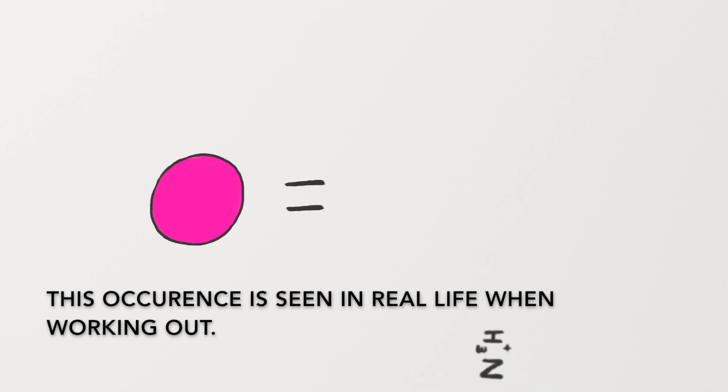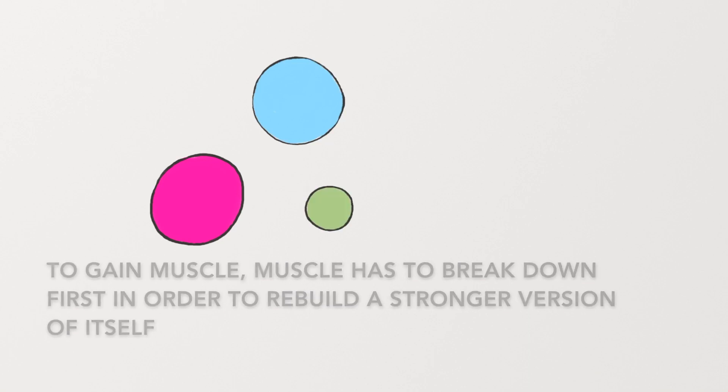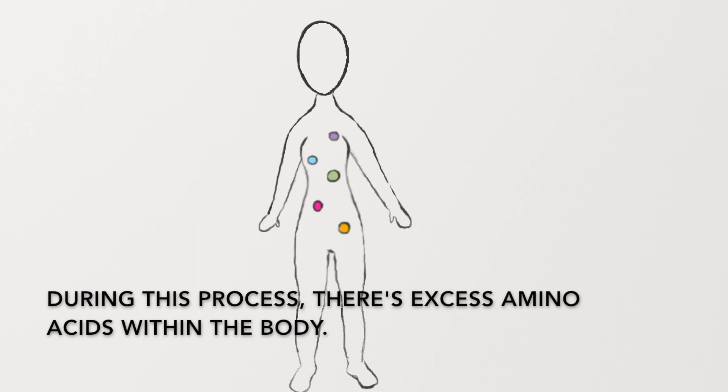This occurrence is seen in real life when working out. To gain muscle, muscle has to break down first in order to rebuild a stronger version of itself. During this process, there's excess amino acids within the body.